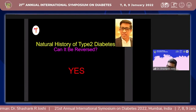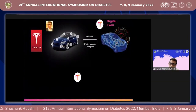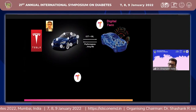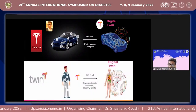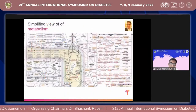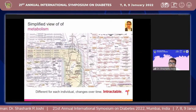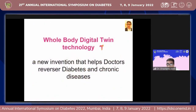The natural history of type 2 diabetes can be reversed. Today it is possible to reverse it, but adherence is a challenge. So how does medicine marry technology? Like a Tesla — an electric car which is automated — electronic twins are generated through the internet of things and machine learning, and they can be integrated into the human body by creating a digital twin. That's what twin technology does. Metabolism is very complex, but can we use a whole-body digital twin technology to help doctors reverse diabetes and chronic disease?